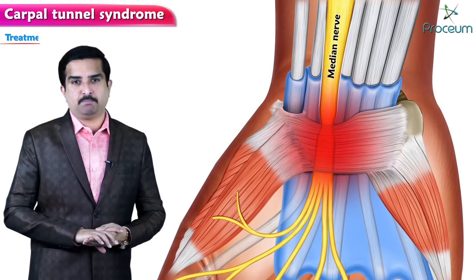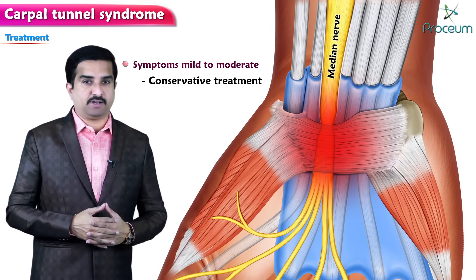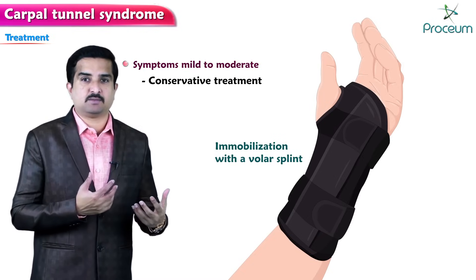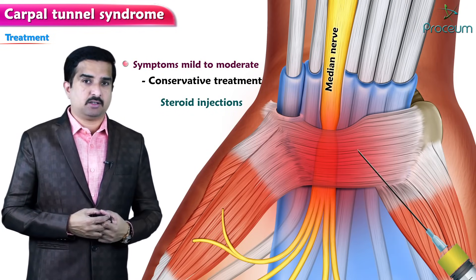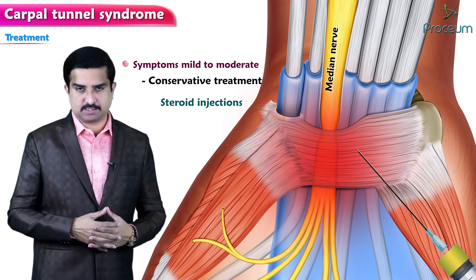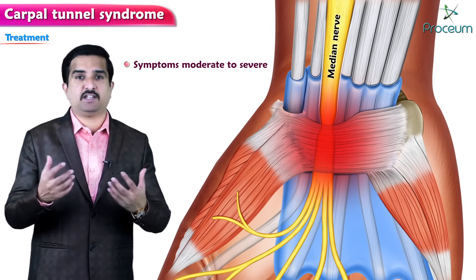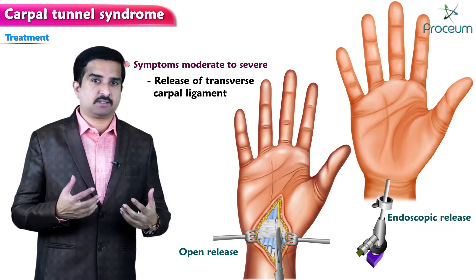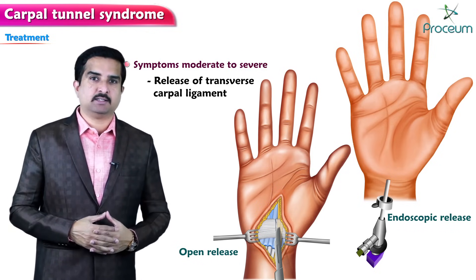For treatment, if symptoms are mild to moderate, conservative treatment is recommended: immobilization of the wrist with a padded volar splint worn during the night, steroid injections, and short-term non-steroidal anti-inflammatory drugs to reduce pain. If symptoms are moderate to severe and there is no response to conservative treatment, open or endoscopic release of the transverse carpal ligament is indicated to relieve pressure within the carpal tunnel.